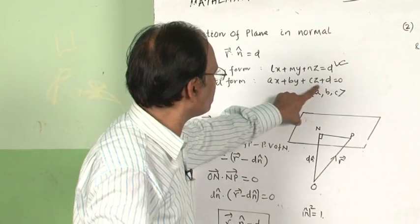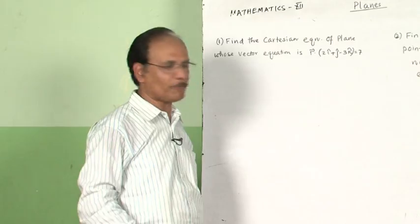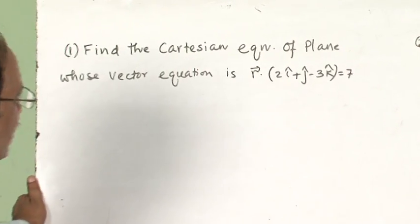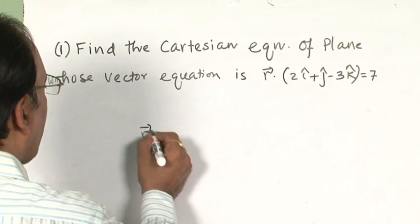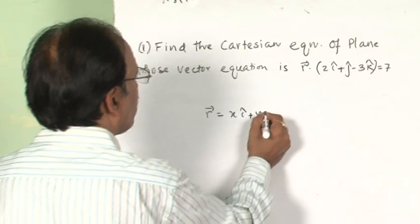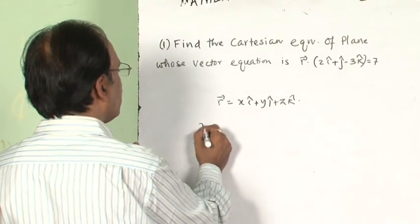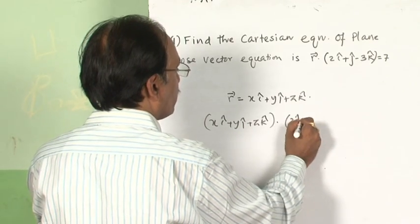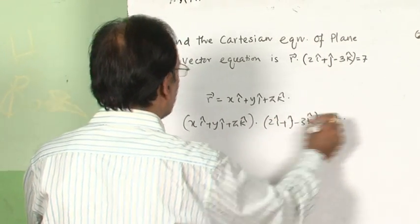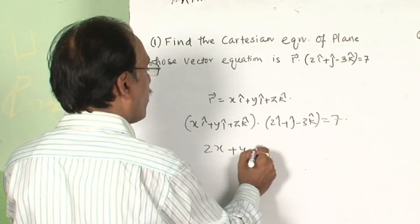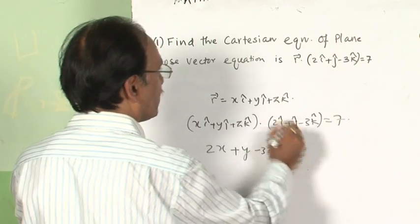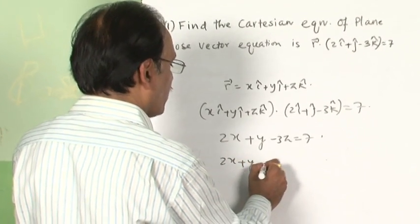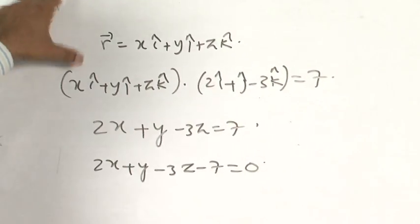In this question you are asked to find the equation of the plane in Cartesian form. You can easily get it by replacing vector r with xi + yj + zk. Substituting: (xi + yj + zk) dot (2i + j − 3k) = 7. The Cartesian form is 2x + y − 3z = 7, or in generalized form: 2x + y − 3z − 7 = 0. This is the answer for this question.